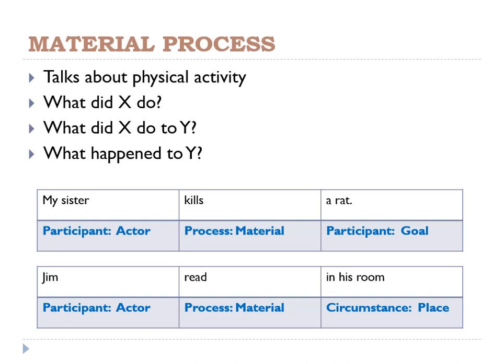If you still remember the mood analysis from our previous weeks, when a sentence is changed into a passive clause — for example, 'my sister kills a rat' becomes 'a rat is killed by my sister' — in mood analysis 'by my sister' will become an adjunct. Meanwhile, in the transitivity system, no matter how you change active into passive or passive into active, when we talk about material process, my sister in this clause will still become the actor. A rat is still a goal because it is the one that is killed. Kills is still the process and 'by my sister' is still the actor. So please don't mix it up with mood analysis.